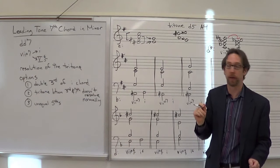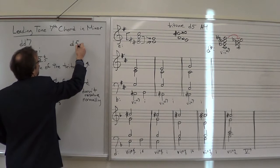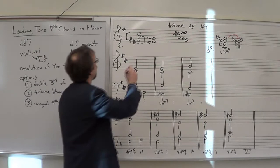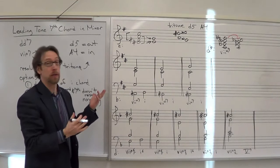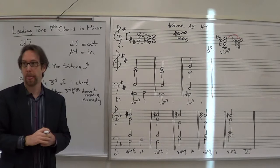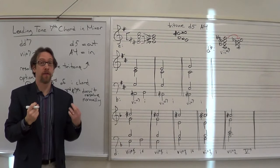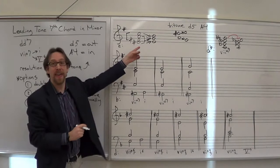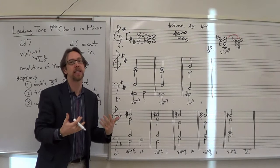The general rule: diminished fifth resolves in, augmented fourth resolves out. For the second tritone, F-sharp and C form a diminished fifth, so F-sharp resolves up to G and C resolves down to B. These are the natural resolution tendencies for the tritones. Doubling the third of the one chord is a good option because it allows those natural tritone tendencies to resolve as expected.